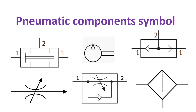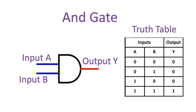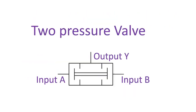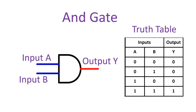Now let's proceed to pneumatic component symbols. The two-pressure valve works on the same principle as a series circuit and AND gate. The output of the two-pressure valve is true or high if both pressure inputs A and B are true, otherwise it is false. In the equivalent series circuit, the bulb will only glow if both switches are on; if one switch is off, the light will not glow. The AND gate behaves according to a truth table.